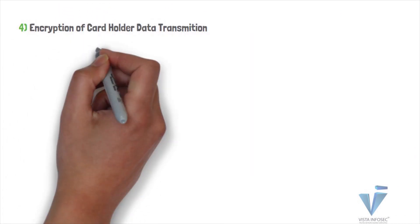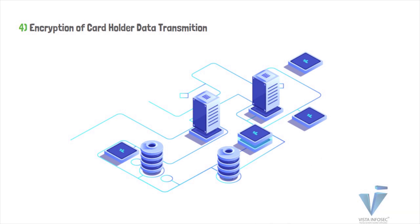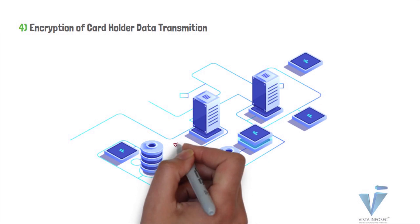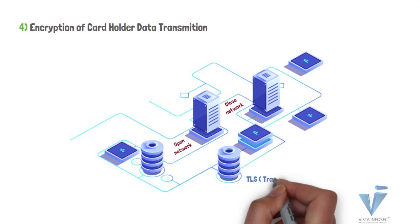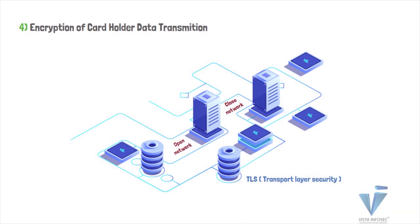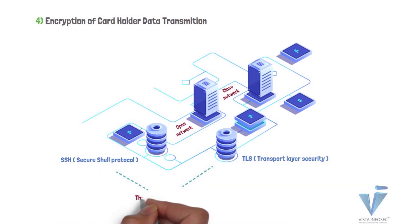Requirement 4, which is encryption of transmission of cardholder data, requires businesses to secure the sensitive card data when it is transmitted over an open or public network. Organizations are required to encrypt card data prior to the transmission process by using a secure version of transmission protocols such as TLS, which is Transport Layer Security, and SSH, which is Secure Shell Protocol. This secures the entire data transmitting process in the card environment.